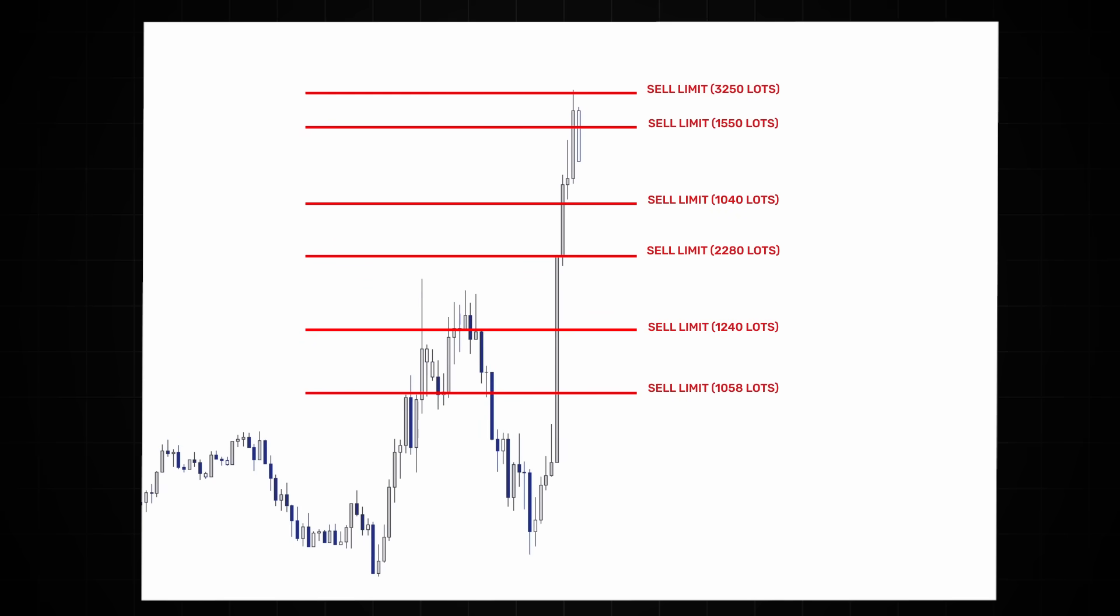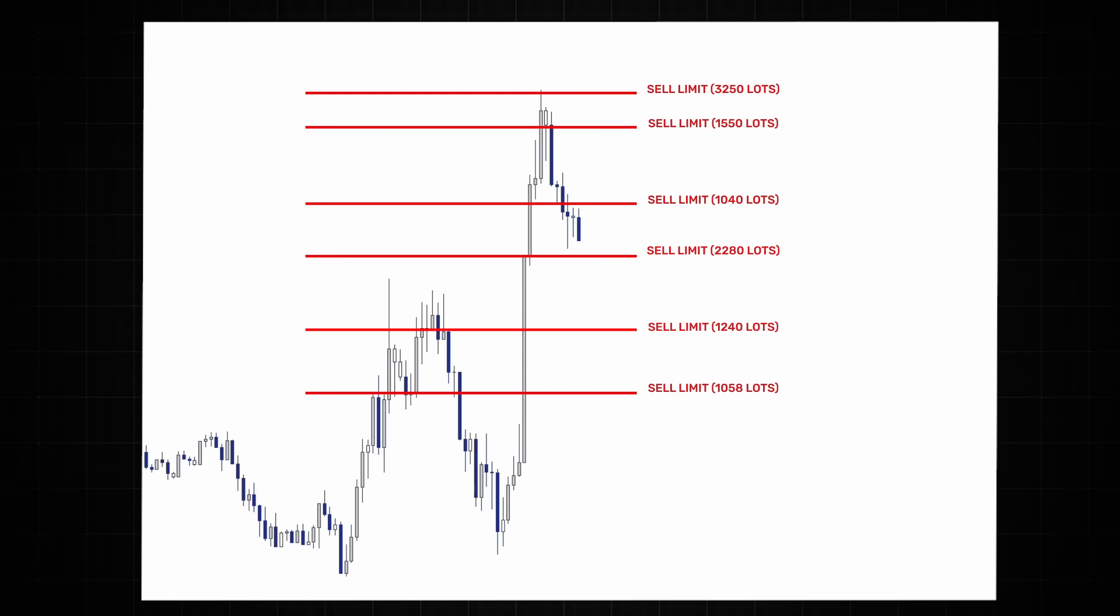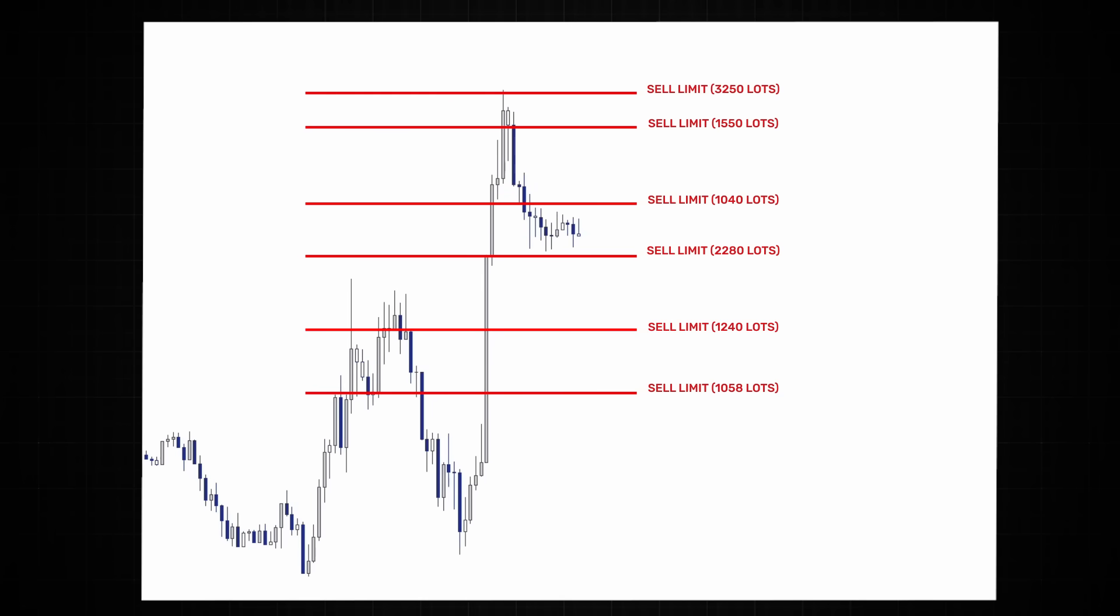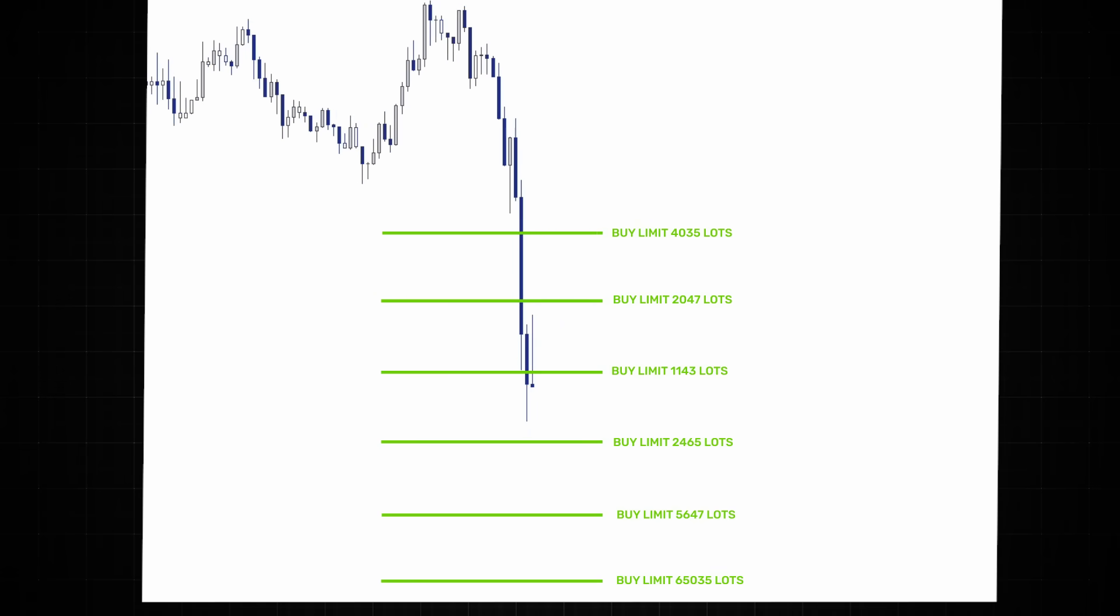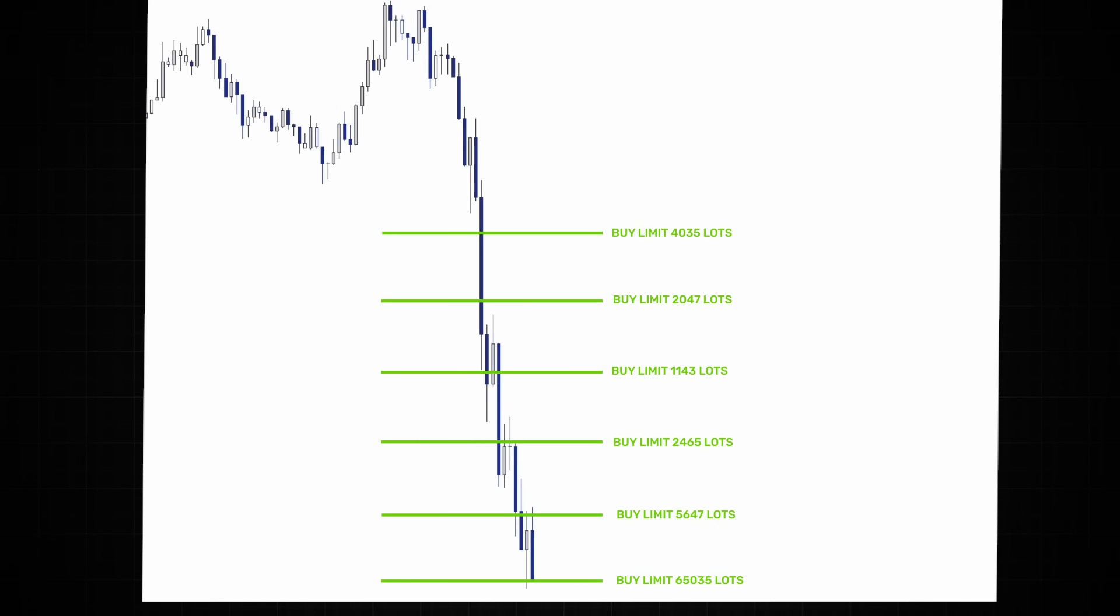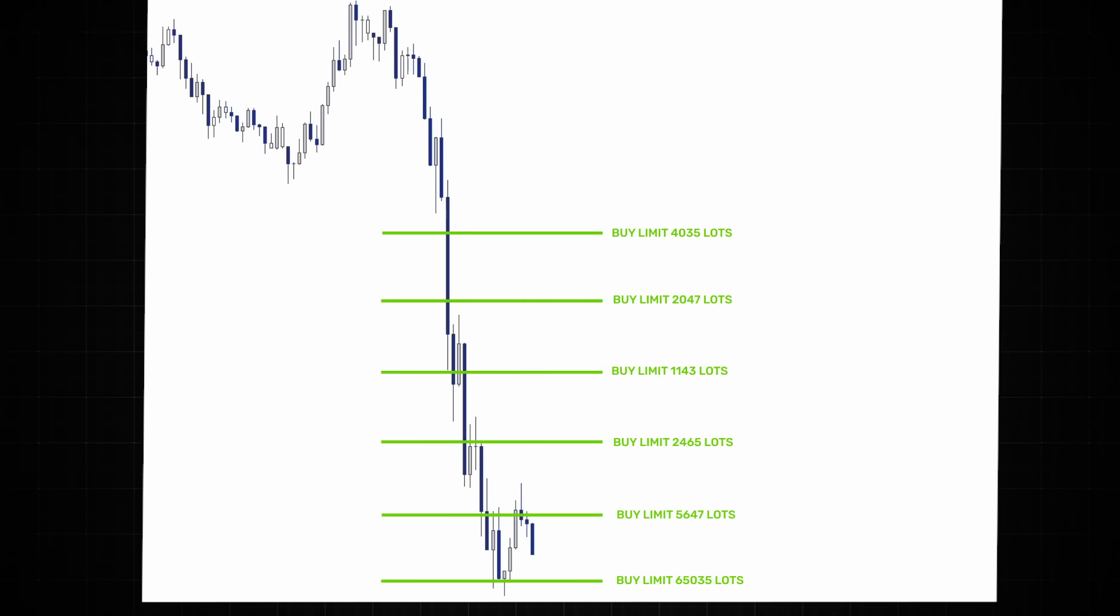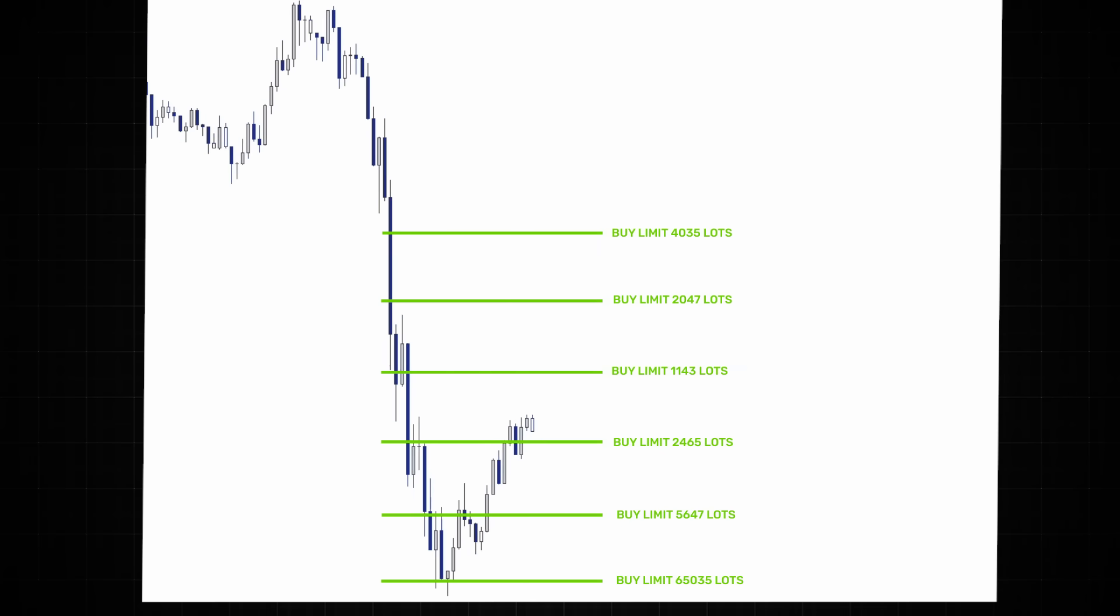So what does this look like on a candlestick chart? Here you can see price impulsively moving to the upside as aggressive buyers keep pushing price higher and higher until they find enough supply to fill their demand and price is then rebalanced. Likewise, here you can see aggressive sellers liquidating all of these bids, pushing the price lower and lower until they have consumed enough demand to fill their supply. And this is how markets move.